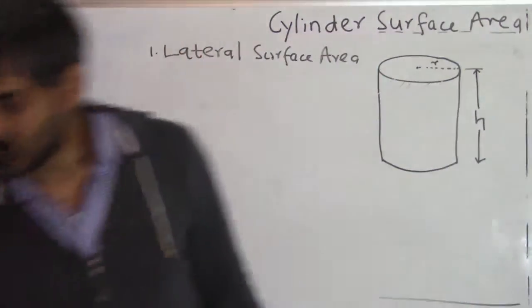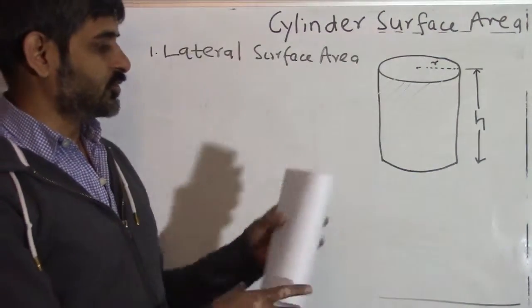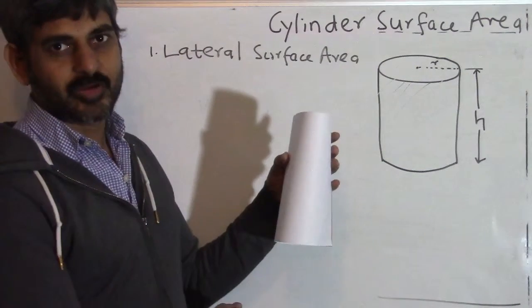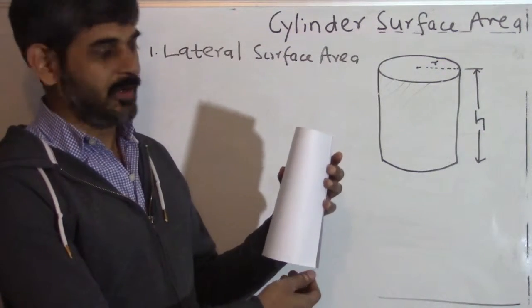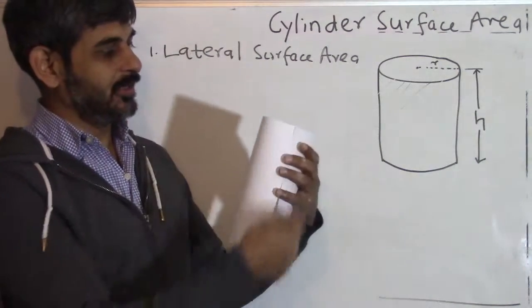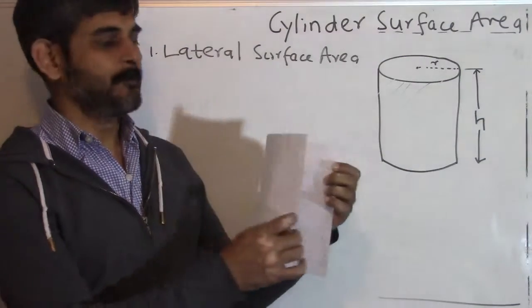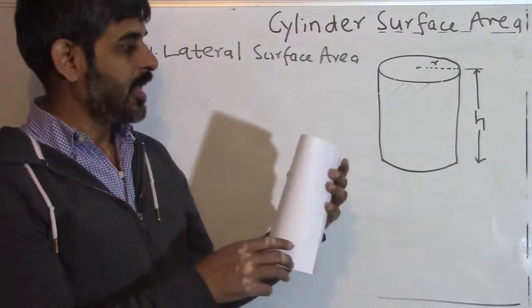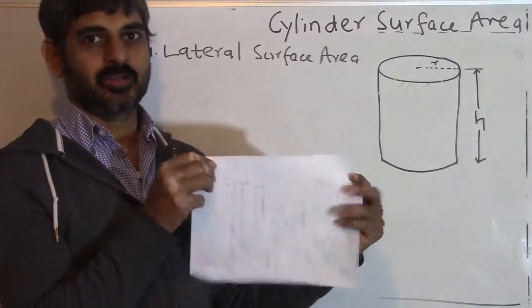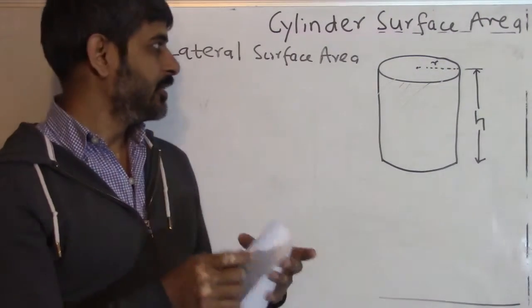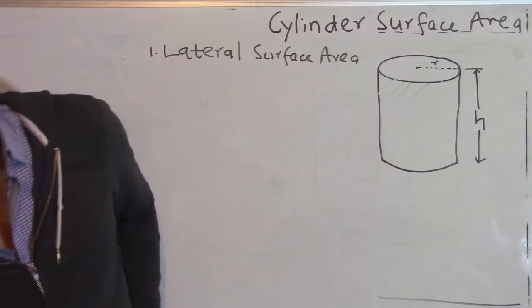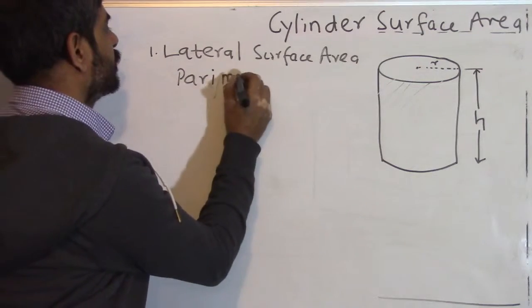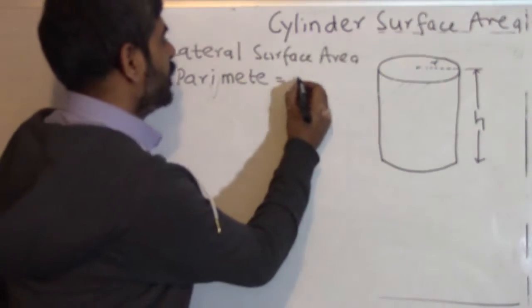How do we do that? Let's say we wrap a paper around the solid cylinder — this is the whole area that we need to find out. If I cut this paper and open it up, it becomes a rectangle. This rectangle has the same height as the height of the cylinder. All we need to find out is the width of this rectangle.